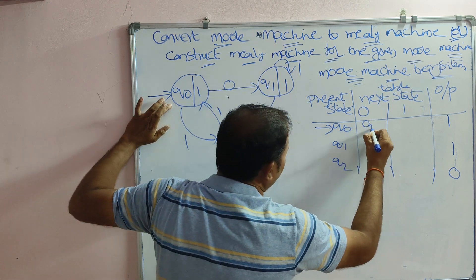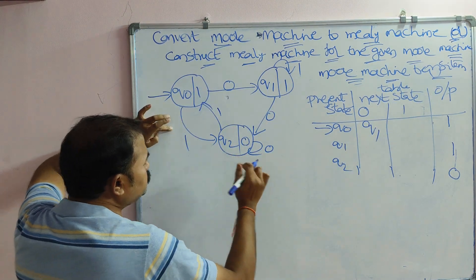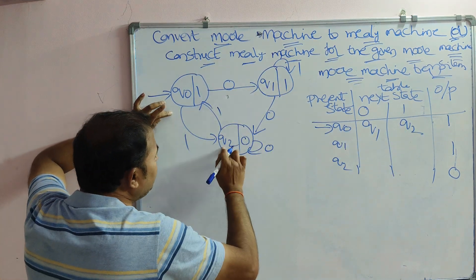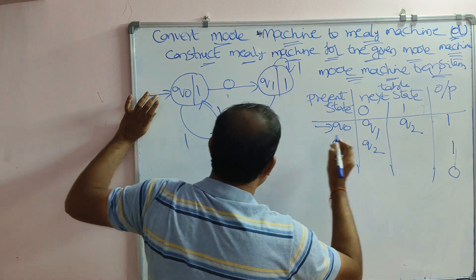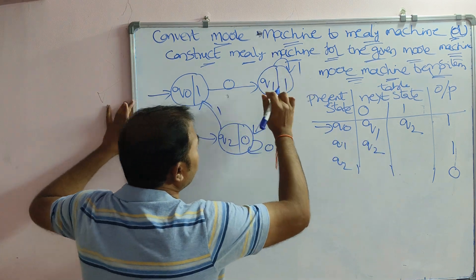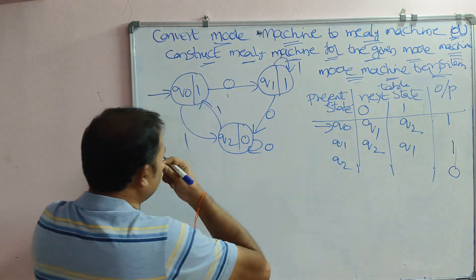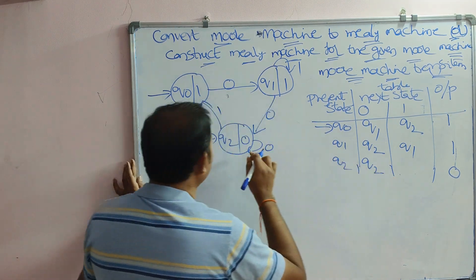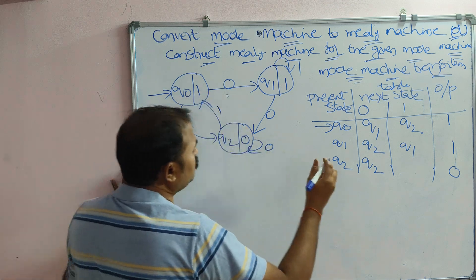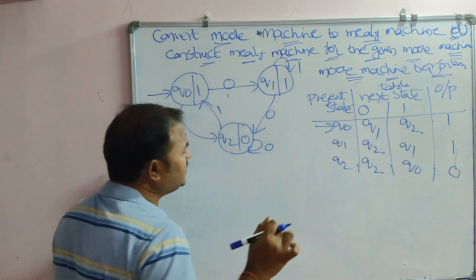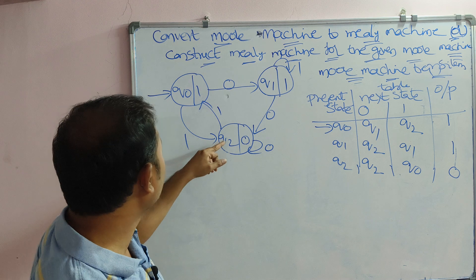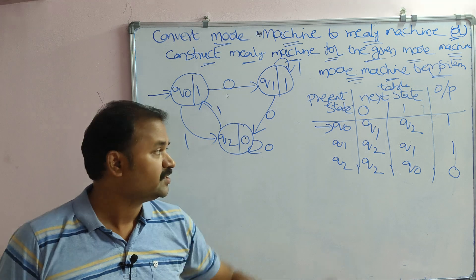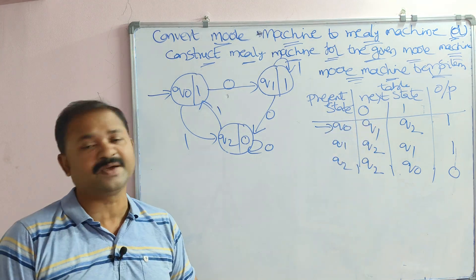Now filling in the transitions: Q0 on 0 goes to Q1, Q0 on 1 goes to Q2. Q1 on 0 goes to Q2, Q1 on 1 goes to Q1. Q2 on 0 goes to Q2 (self-loop), Q2 on 1 goes to Q0. This completes the Moore machine transition table.